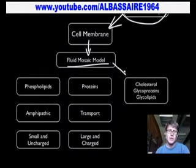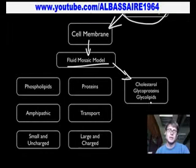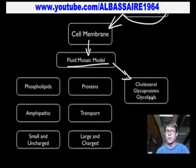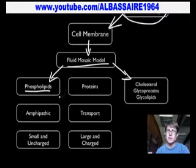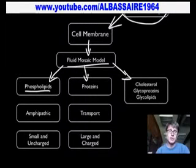There are a few things — cholesterol, glycoproteins, and glycolipids — that are found within the cell membrane that are important. But the majority of the important things in a cell membrane are the phospholipids, which are the fats, and then the proteins.